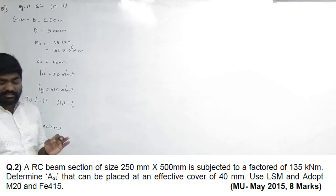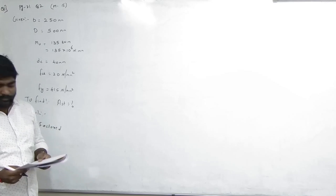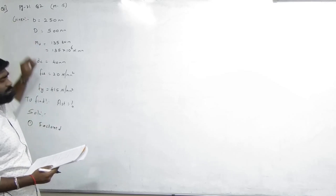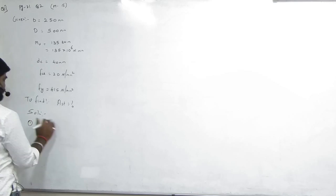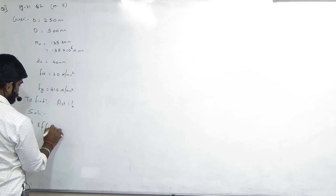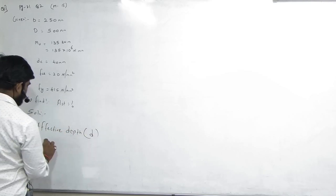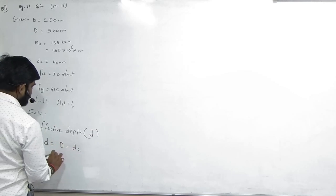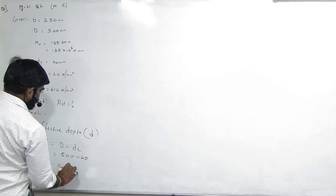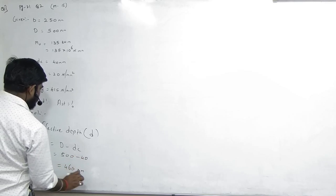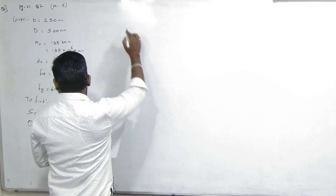Kyunki aapko B aur D diya hua hai sum mein, Case 2 mein jaayenge. Hume small d chahiye, toh pehle small d dhundh lete hain. Effective depth d = capital D minus DC = 500 minus 40. Agar effective cover nahi diya ho toh 40 fix hai.